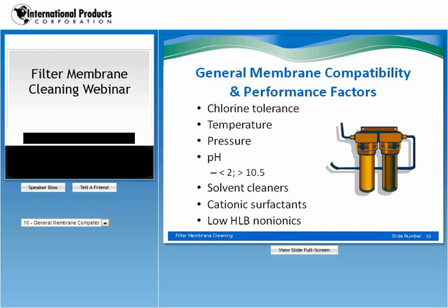So you have your new membrane right out of the box, and with it are its operating specifications — the do's and don'ts of handling your membrane. Four of the most common factors are chlorine tolerance, temperature, pressure, and pH. Many membranes, especially thin-film composites, can't tolerate any chlorine at all. Even concentrations of chlorine less than 1 ppm could be destructive to these membranes. So knowing what's in your water source is critical. Temperature and pressure are very common factors, and exceeding these operating limits could also irreparably harm the membrane.